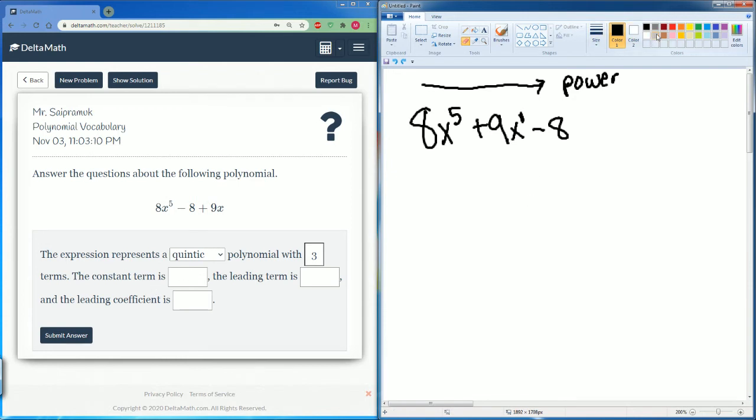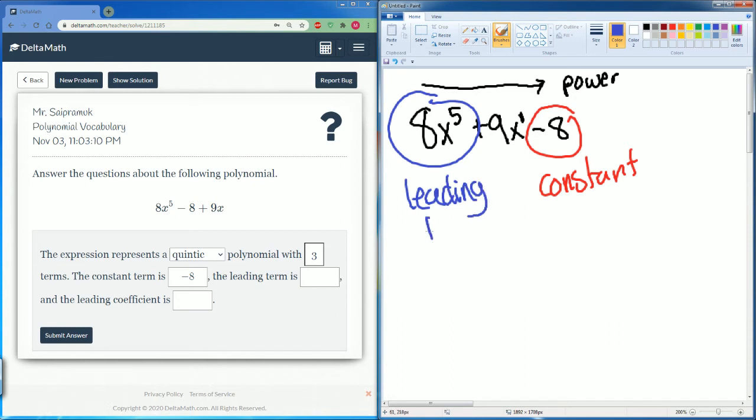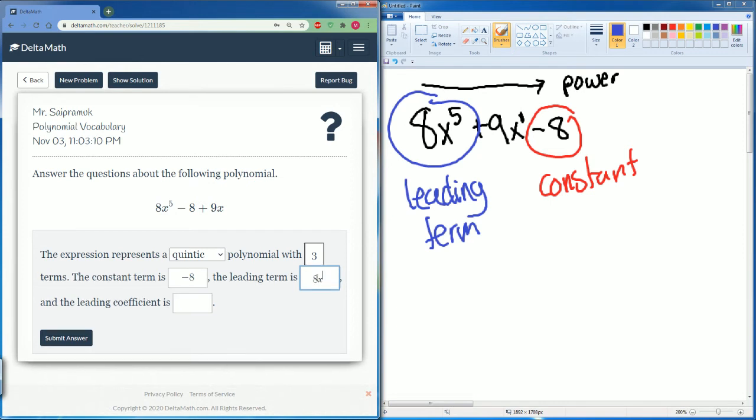The constant term would be just the number here. This is just the constant, negative 8. The leading term, which is in front, this is the whole thing here, is the leading term. So it is 8x to the fifth power.